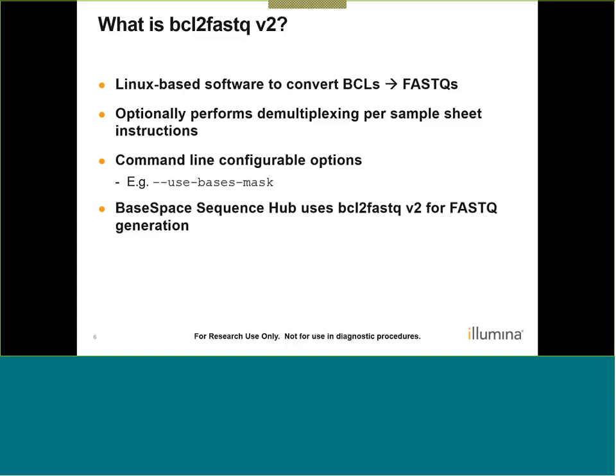BCL to FASTQ can perform demultiplexing per the sample sheet instructions. If you multiplex your samples together, you can specify the index sequences in a sample sheet and demultiplex the data so that each read is assigned to the correct sample. BCL to FASTQ is command-line configurable with options such as the use bases mask command. We want to note that BaseSpace Sequence Hub also uses BCL to FASTQ version 2 for FASTQ generation, so you should see very good parity between locally generated and BaseSpace-generated FASTQ files.